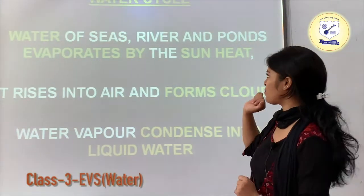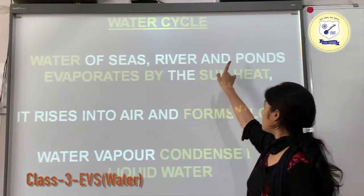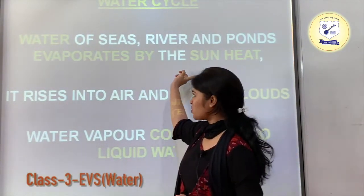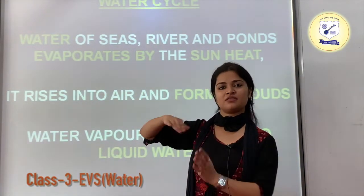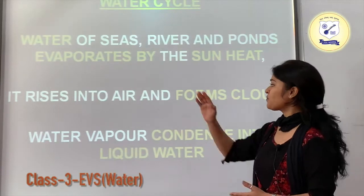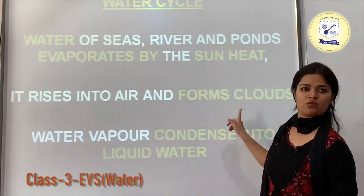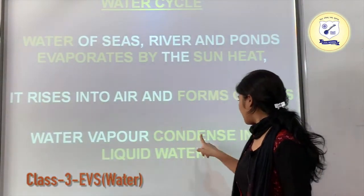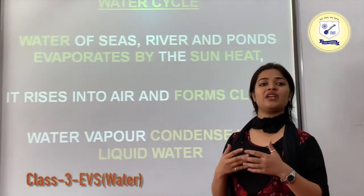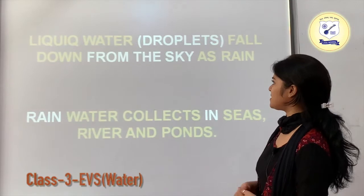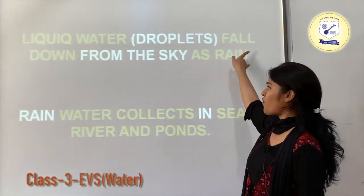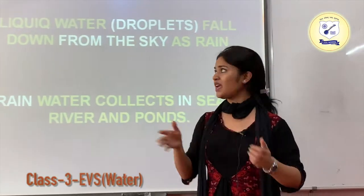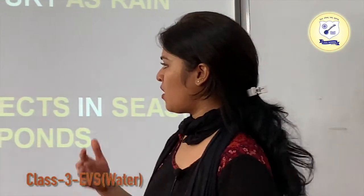Now the water cycle: water from seas, rivers, and ponds evaporates due to the sun's heat. The water rises into the air and forms clouds. When the water vapour rises up, it starts forming clouds. The water vapour then condenses into liquid water — it starts condensing when it cools. On cooling, liquid water droplets fall down from the sky as rain, and the clouds release rain, returning water to liquid form.